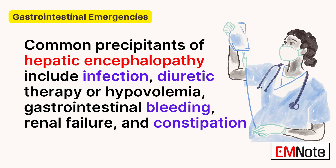Common precipitants of hepatic encephalopathy include infection, diuretic therapy or hypovolemia, gastrointestinal bleeding, renal failure, and constipation.